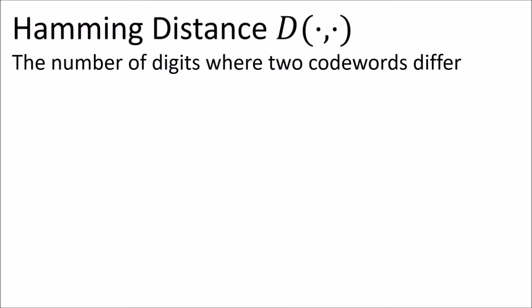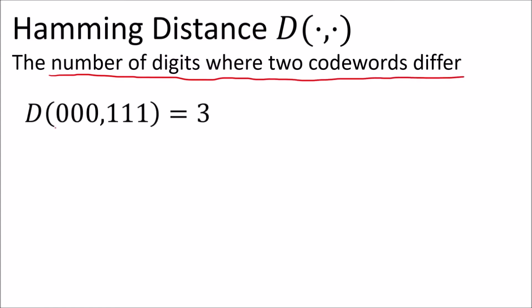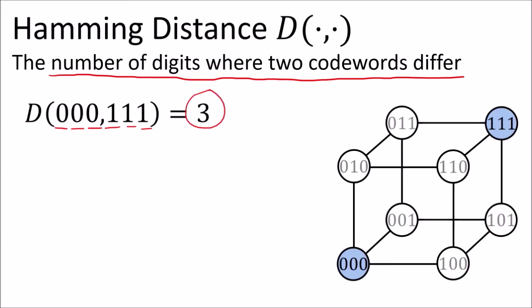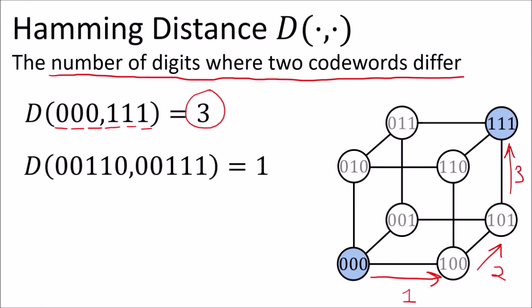Next I'll define the Hamming distance function, which takes two code words and counts the number of digits where the code words are different. Here all three digits are different, so the Hamming distance is three. And this tells us that there are three edges separating these two code words if we're thinking geometrically.